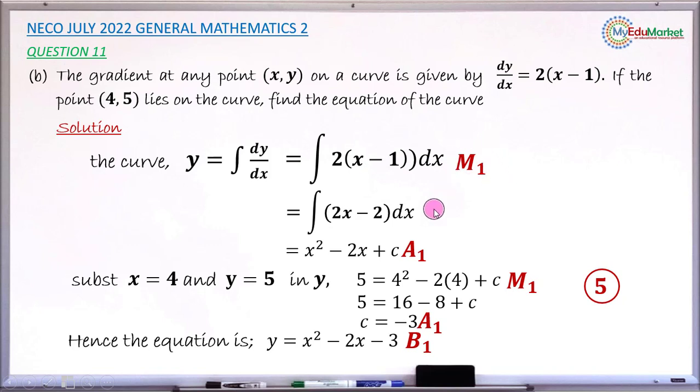When you now integrate correctly and have x squared minus 2x plus c, you have this accuracy 1 mark. And when you now substitute the value of x as 4, the value of y as 5 in your curve y equals x squared minus 2x plus c, in attempt to get this c, you now have this method 1 mark.